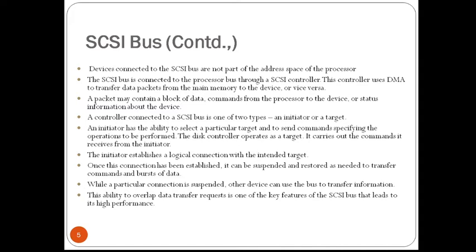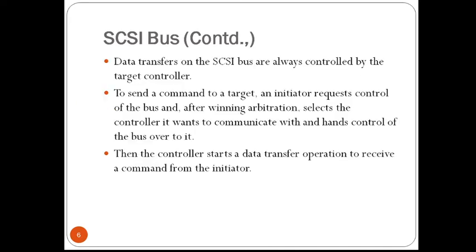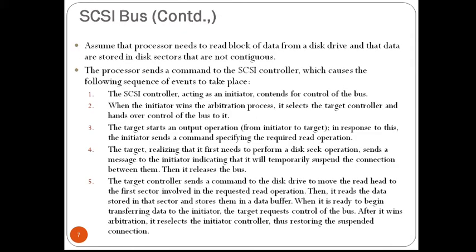Data transfers on the SCSI bus are always controlled by the target controller. To send a command to a target, an initiator requests control of the bus, and after winning the arbitration it selects the controller it wants to communicate with and hands control of the bus over to it. The target then starts a data transfer operation to receive a command from the initiator. Let us take up an example of a complete disk read operation. The processor sends a command to the SCSI controller, which causes the following sequence of events to take place.